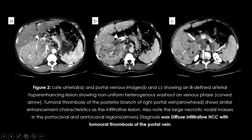Three images — late arterial, portal venous, and delayed phases — show an ill-defined hyper-enhancing lesion with non-uniform heterogeneous washout on delayed images. A wedge-shaped area of hyper-enhancement is due to tumoral thrombus in the right portal vein, visible as a filling defect that enhances similarly to the lesion. The third image also shows large necrotic nodal masses. This diagnosis is diffuse infiltrative HCC with tumoral portal vein thrombosis, which may be the first presenting finding.